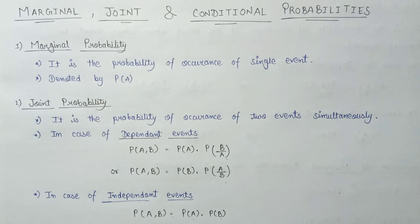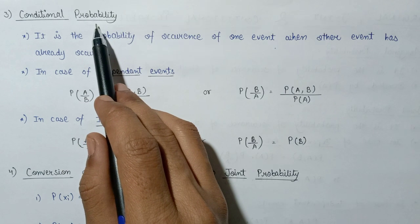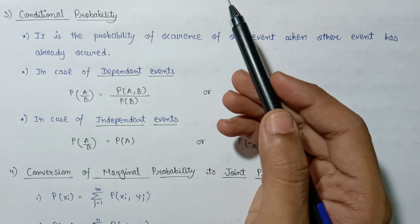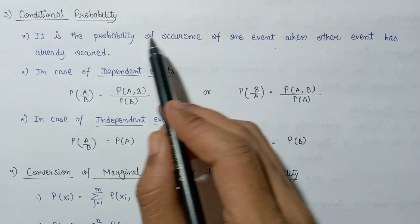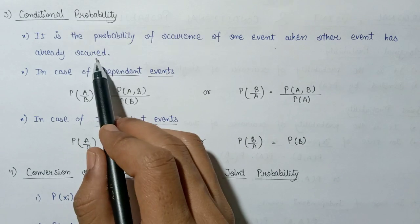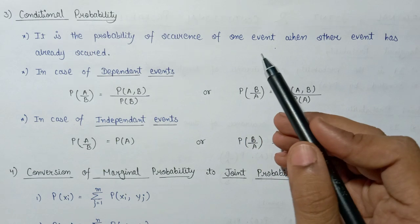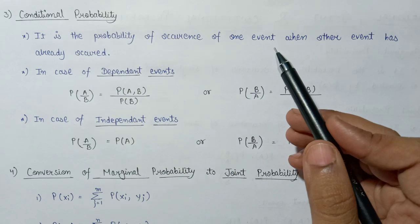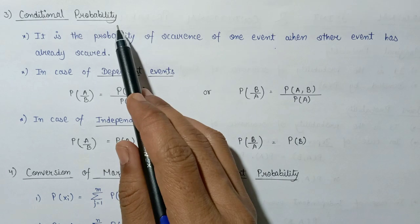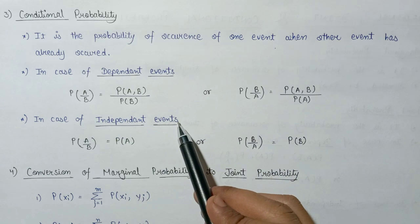Now let us have a look at the third type of probability: conditional probability. As its name suggests, it evaluates the probability of events based on some conditions. It is the probability of occurrence of one event when the other event has already occurred — the first event's probability is evaluated only when the second event has already occurred.